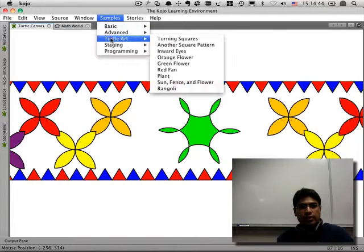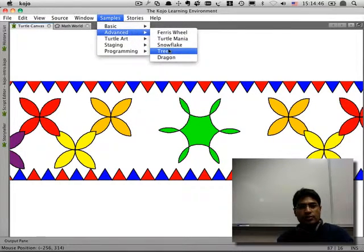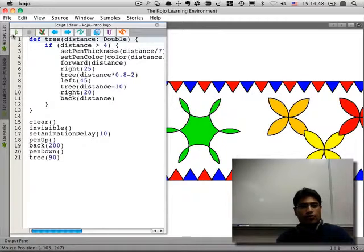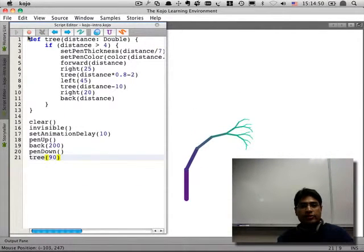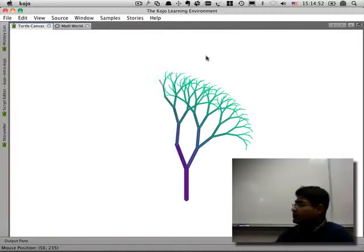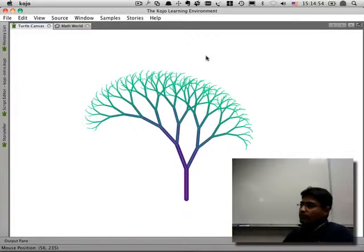The other thing that you can do is to make different kinds of patterns. Here's an example of that. So this is also an example of a certain kind of artwork within Kojo but this is a different kind of a pattern.